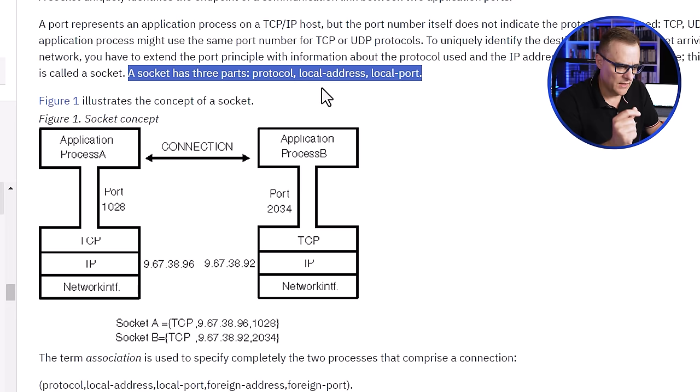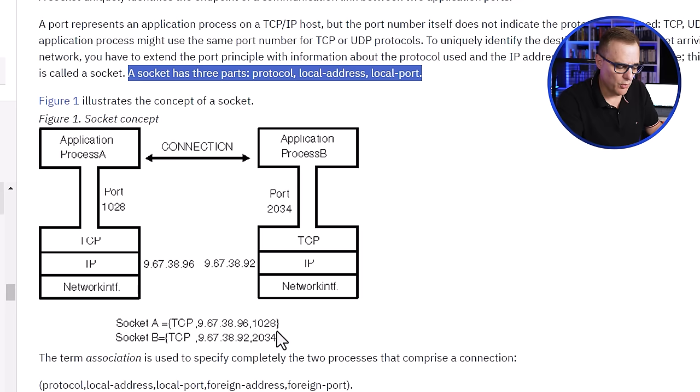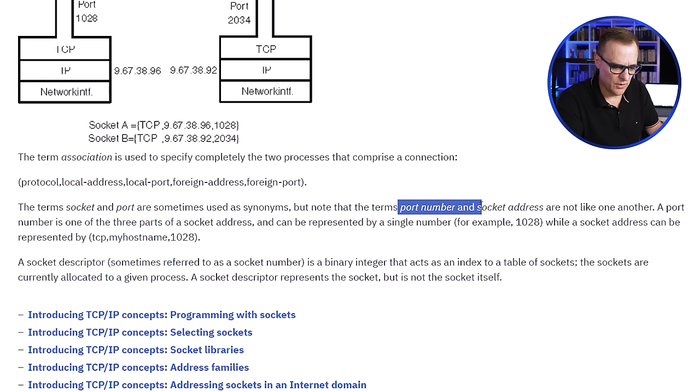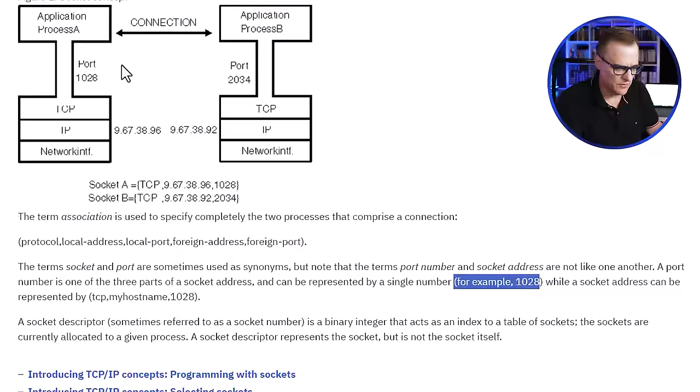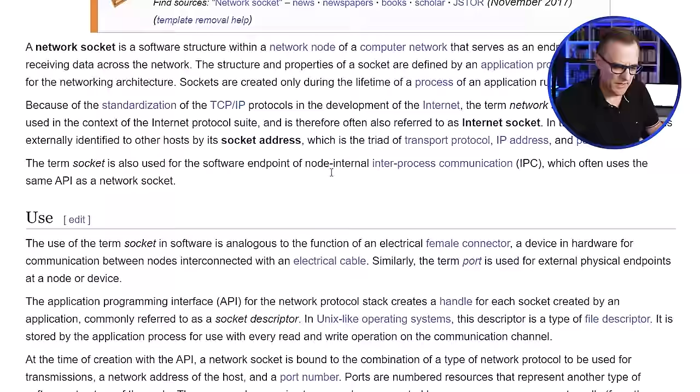Socket B for host B is its protocol (TCP), IP address, and port number. We're also told that 'socket' and 'port' are sometimes used interchangeably or as synonyms — but please note they are not the same. A port is part of a socket — one part of it, represented by a number like 1028. But a socket is represented by protocol, IP address or hostname, and port number.